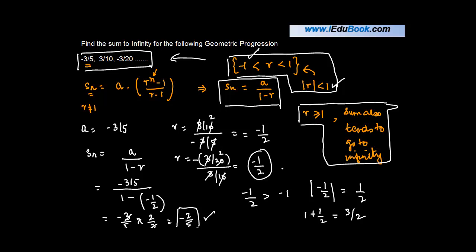Again, as I said, you need to find out the value of r, which is crucial, and then compare as to what is the value which it is getting. If the value is less than 1, greater than minus 1, and the mod of this value is also less than 1, then we apply this formula.